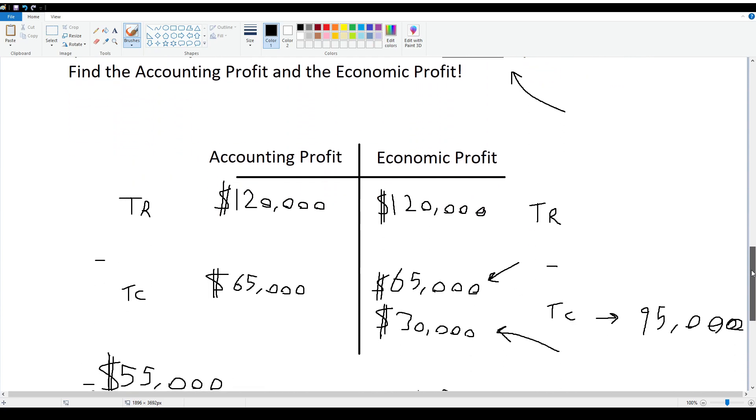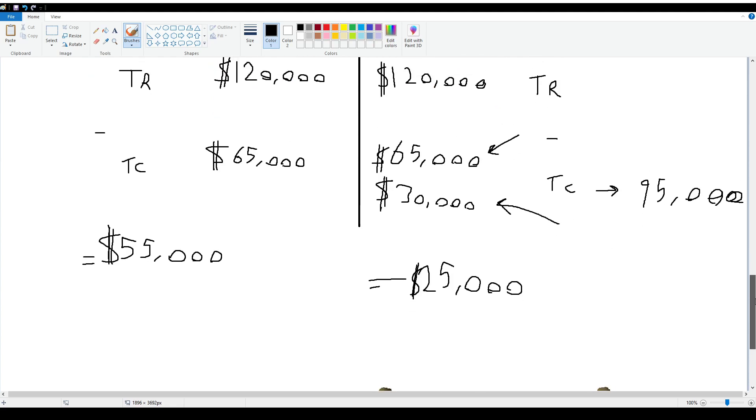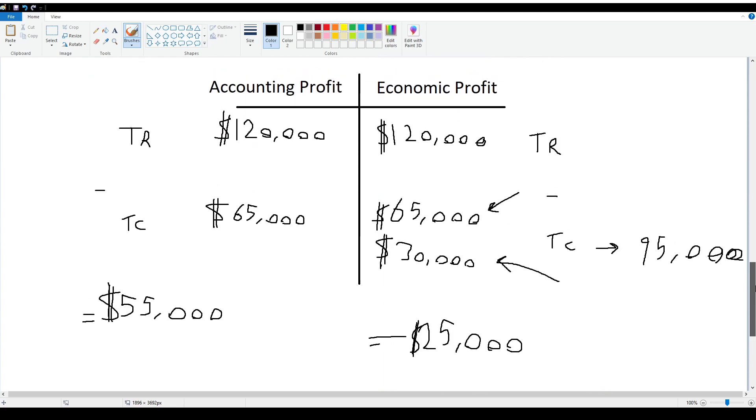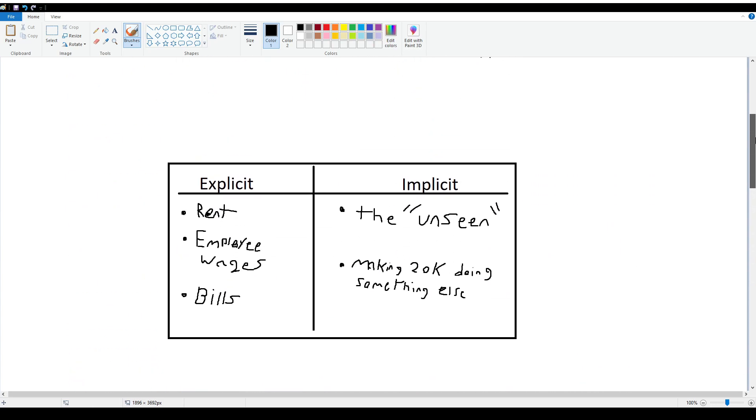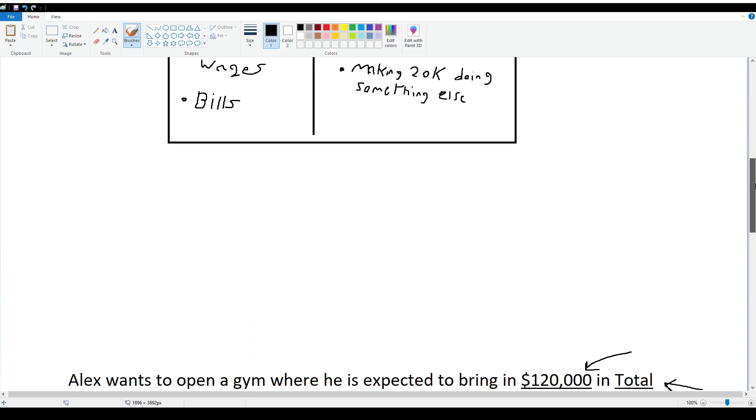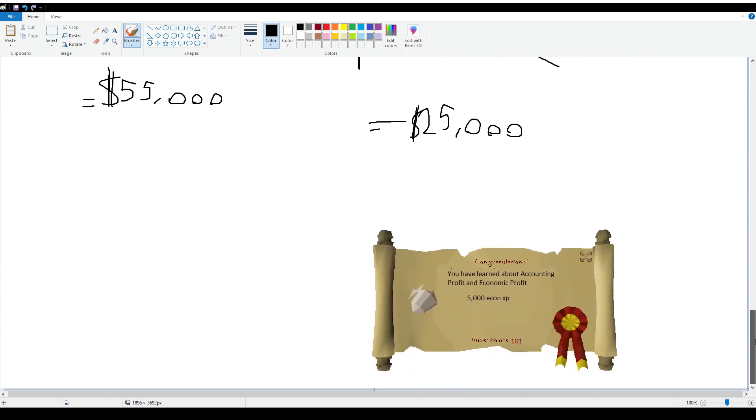I hope that explained accounting profit and economic profit. It's not too bad of a concept. I'm just using this to practice this concept for videos. Hopefully you know what implicit means now, and that ends my quick guide.